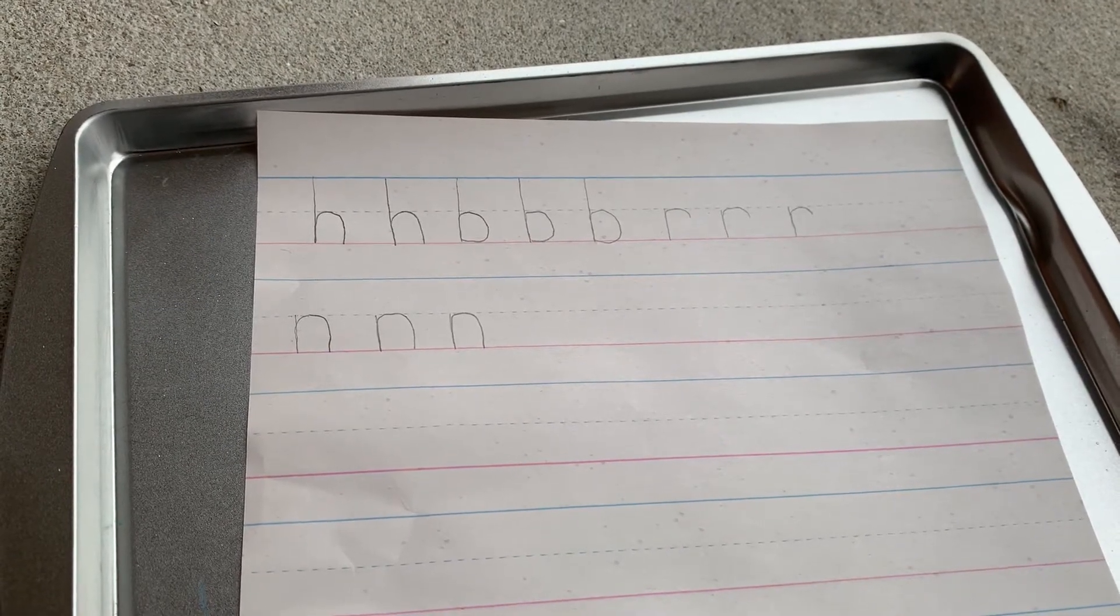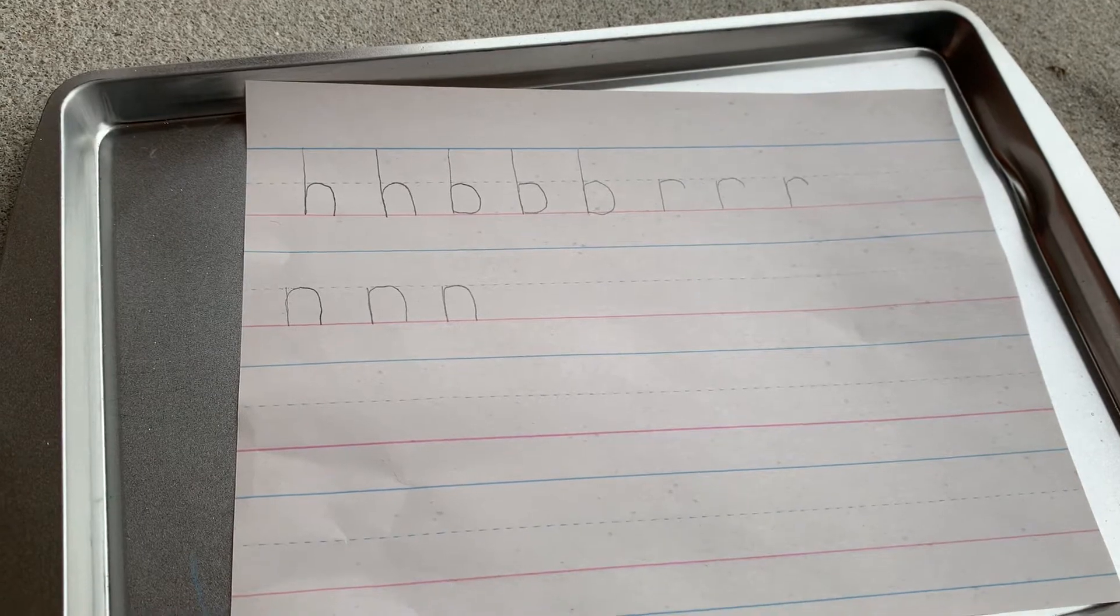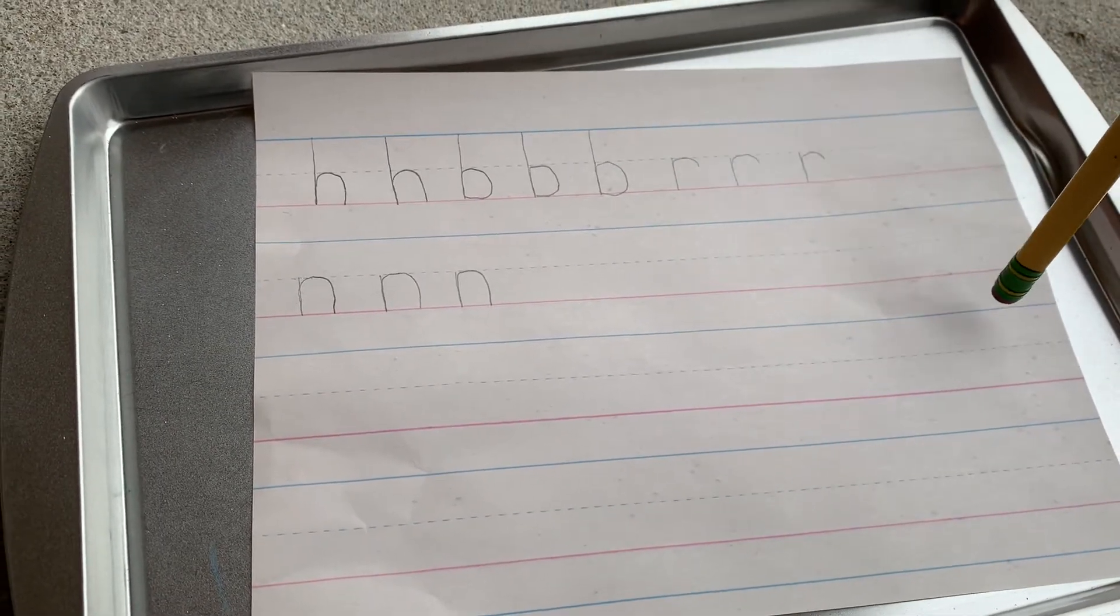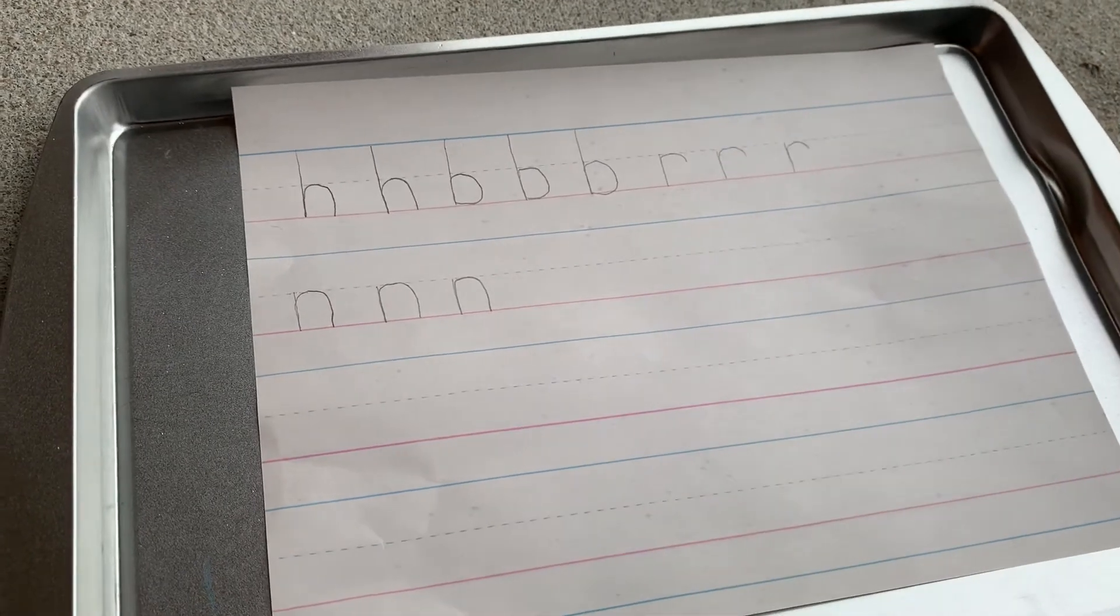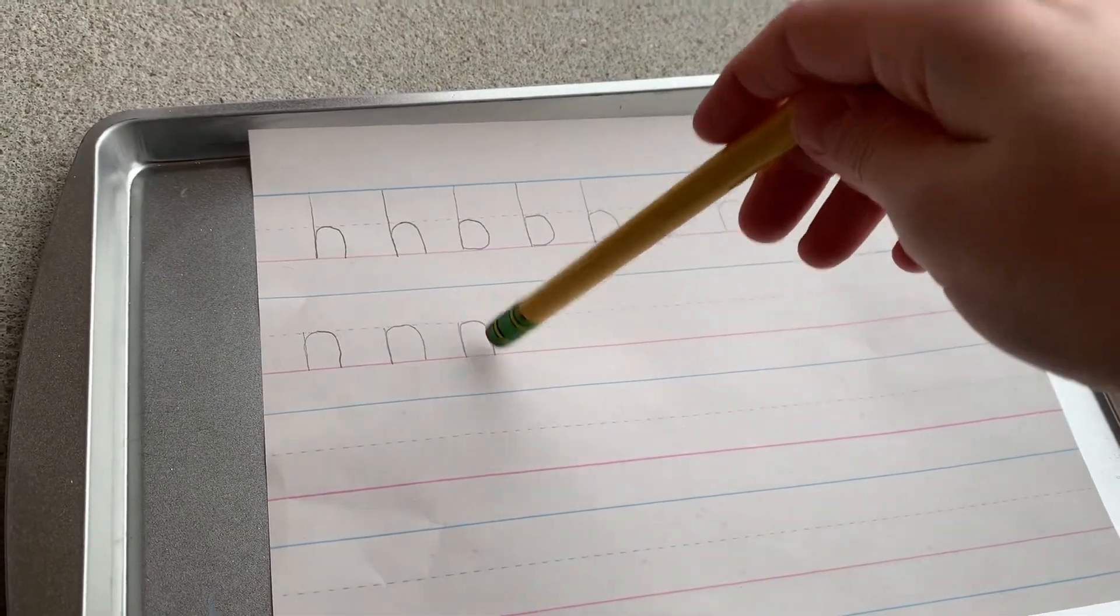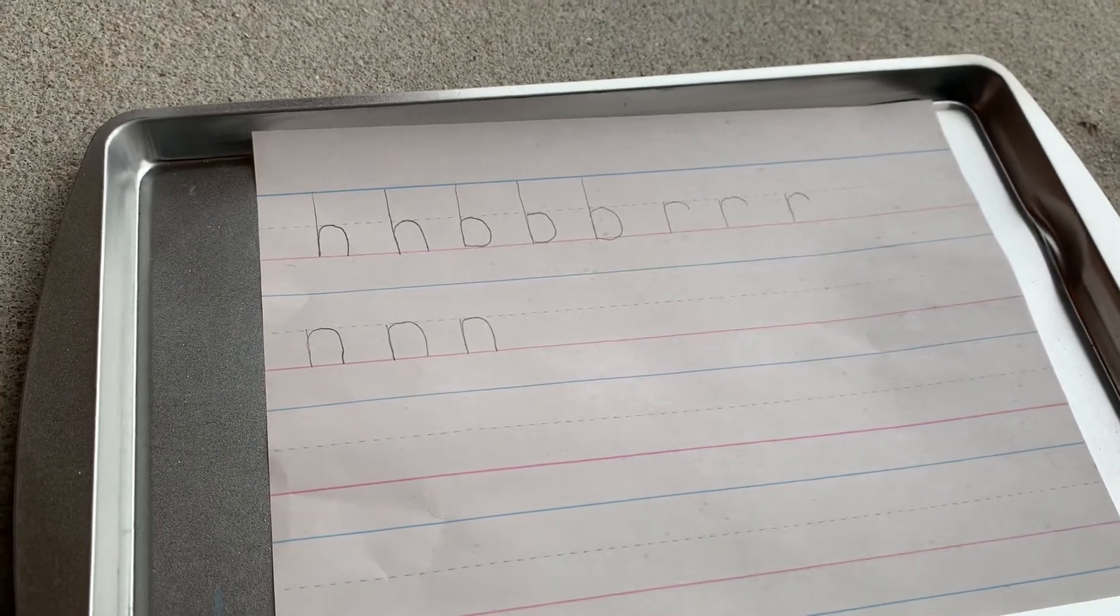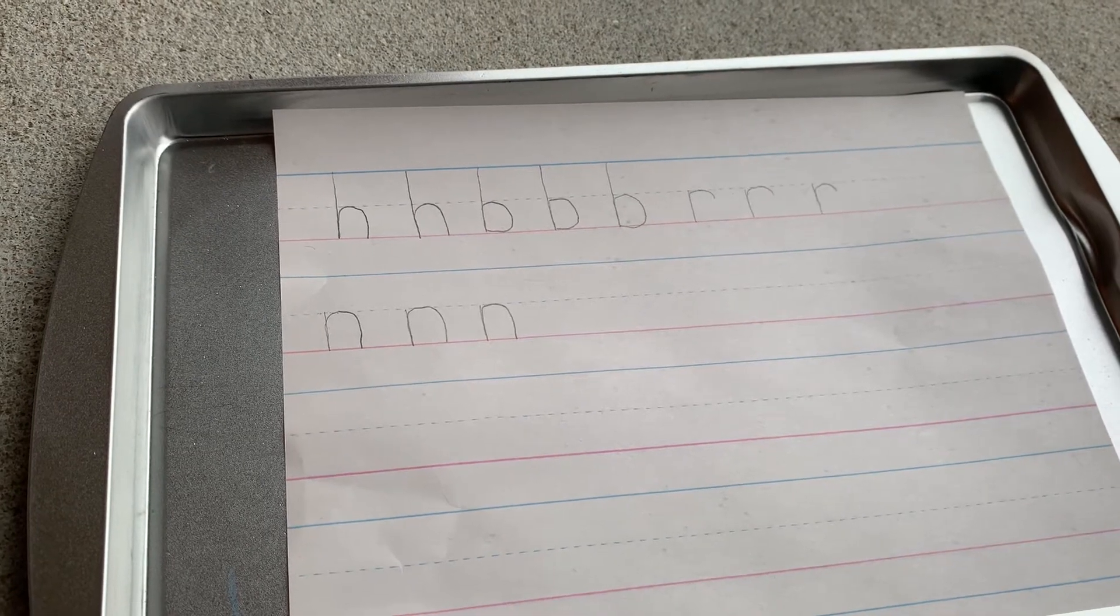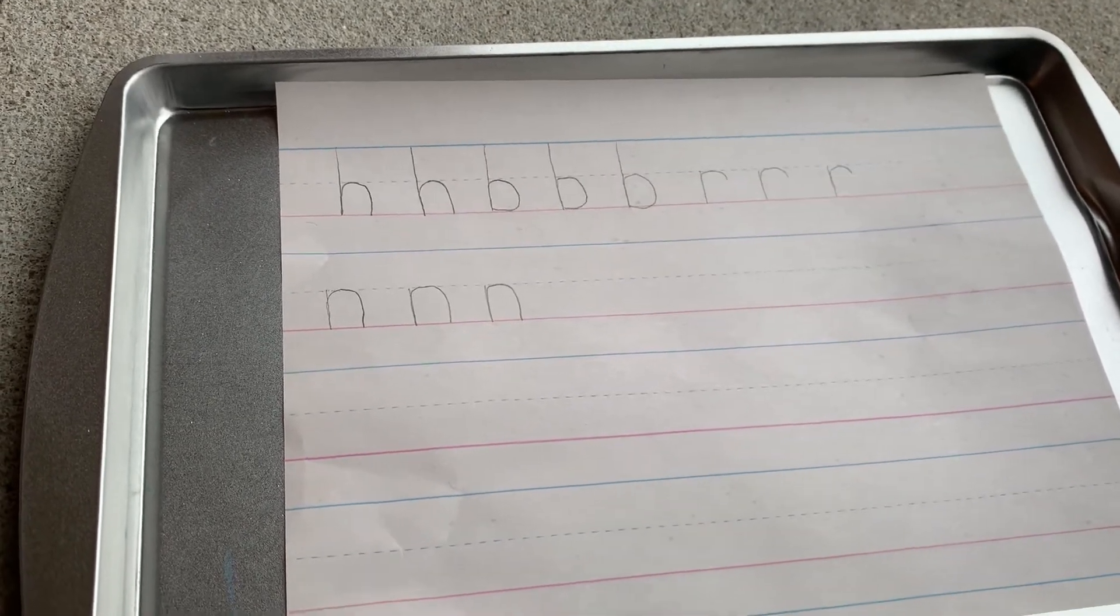Now, we still need to review the m and the p, but we're going to do those in a minute. Right now, since we're writing the letter n, I want to practice writing a sight word that begins with the letter n. And that sight word is no.